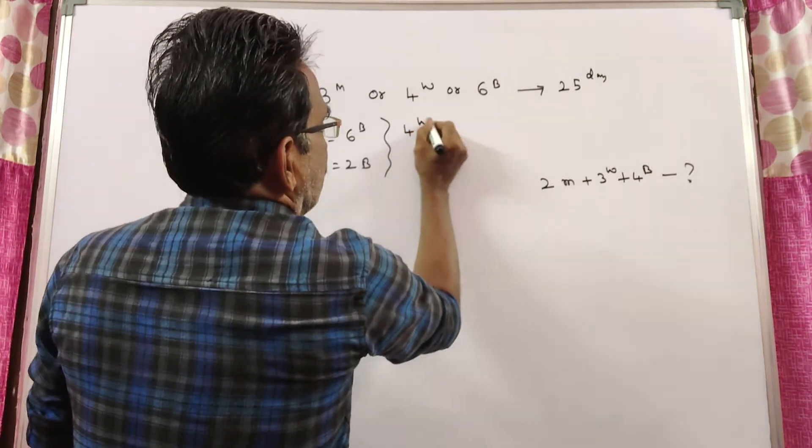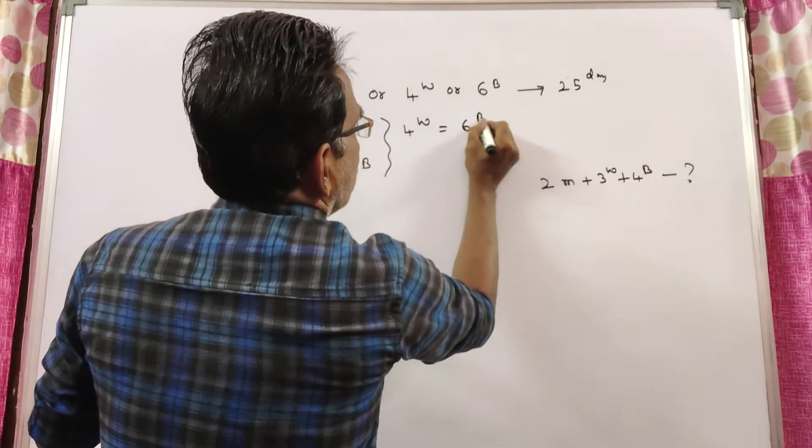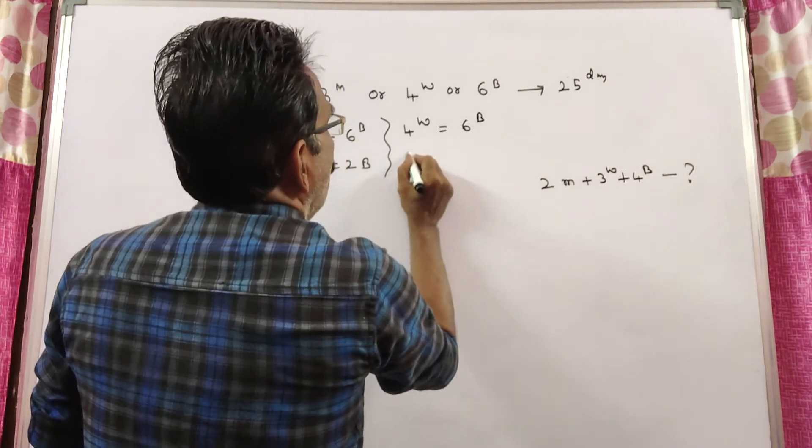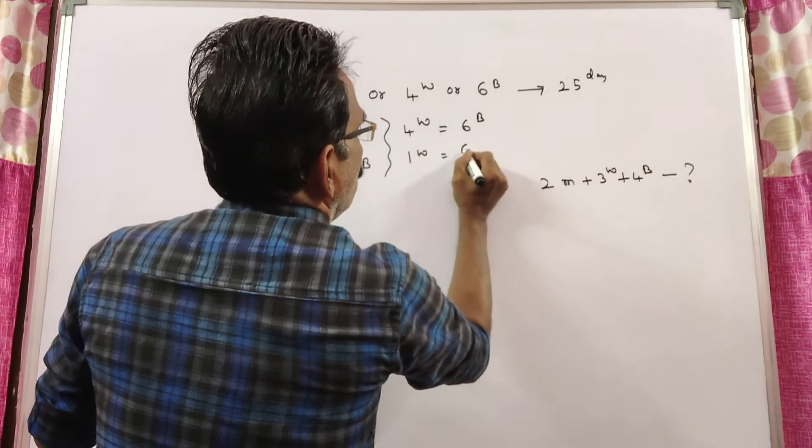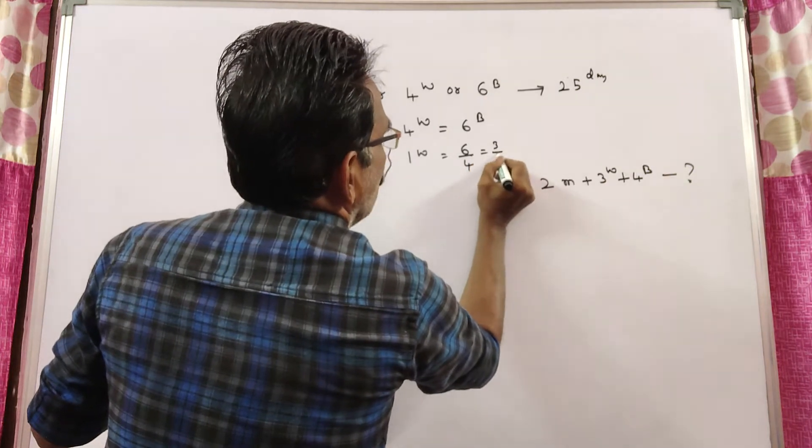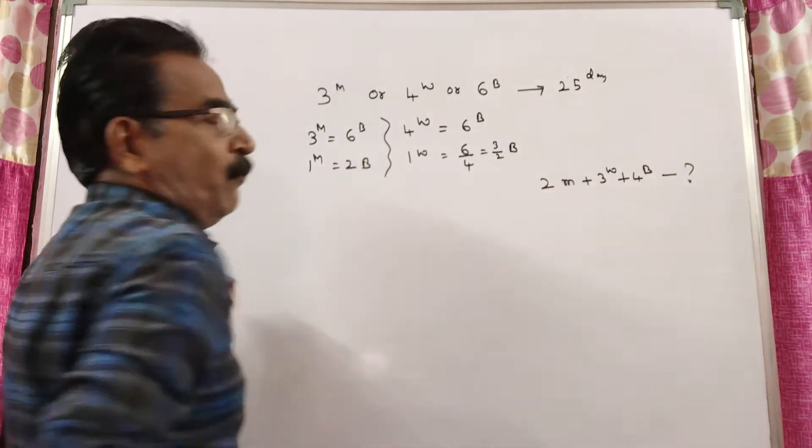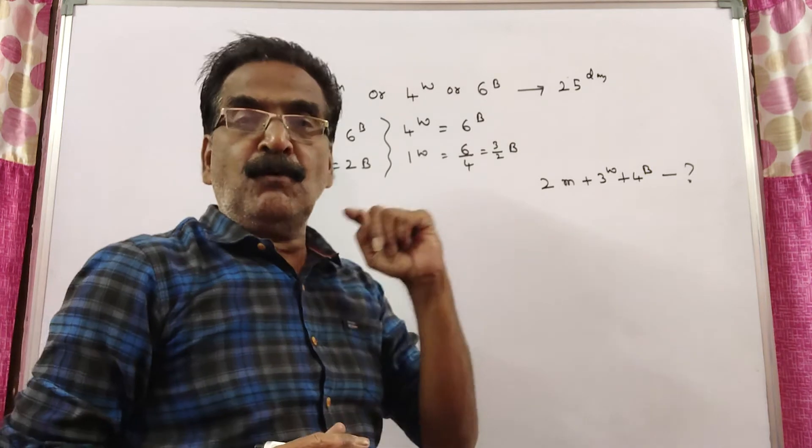In the same way, the capacity of 4 women is equal to 6 boys. So, the capacity of 1 woman is equal to 6 by 4 or 3 by 2 boys. 1 woman is equal to 3 by 2 boys.